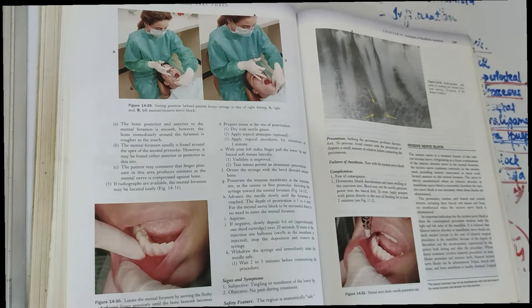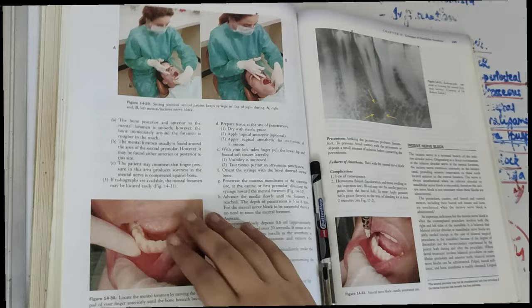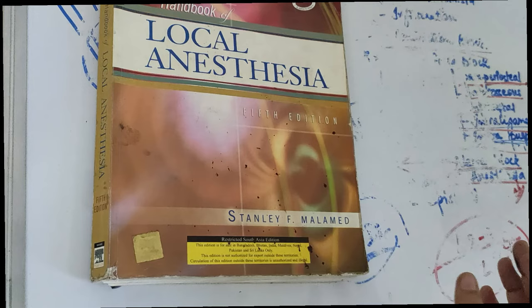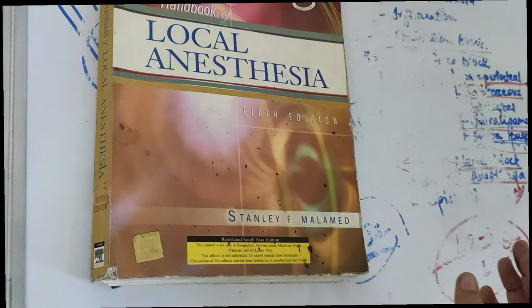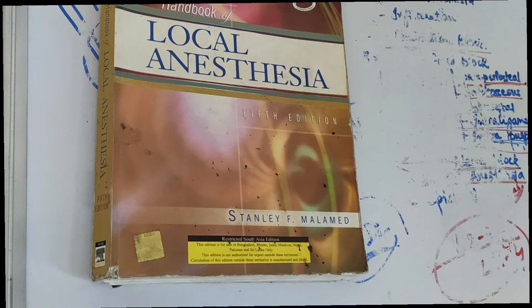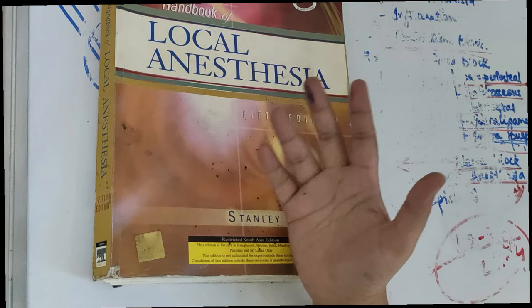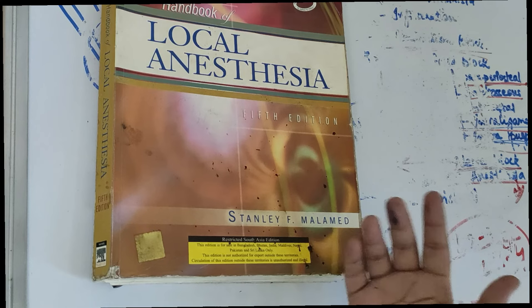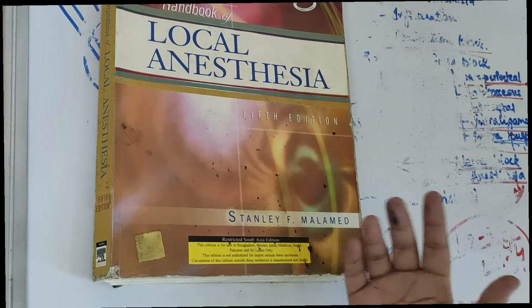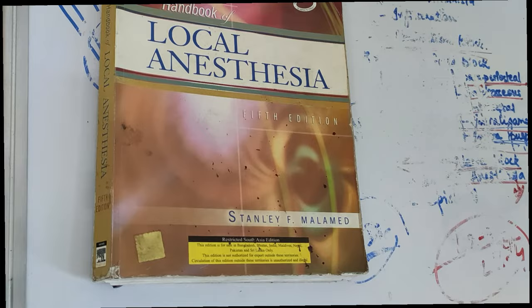These are about the local anesthetic techniques and the nerve blocks. I hope you are clear with the anesthetic techniques and the nerve blocks. This book was Malamed, fifth edition. If you enjoyed the video, give it a thumbs up, subscribe to our channel, share it with your friends, and comment in the comment section below. You can also support us on PayPal and Paytm to make free videos and notes. Keep studying, keep sharing, keep reading. Stay safe, I'll see you soon guys.